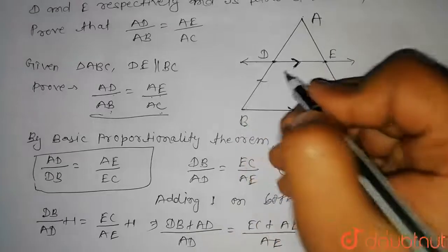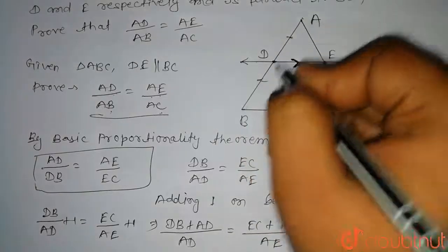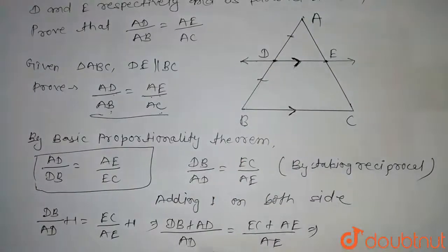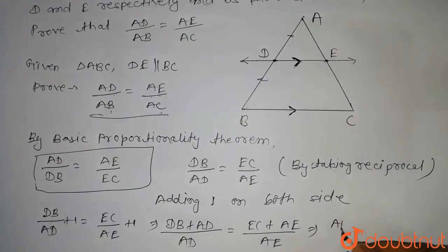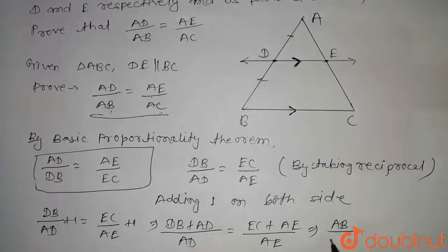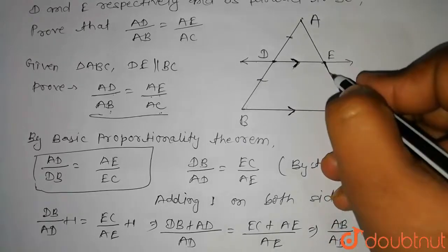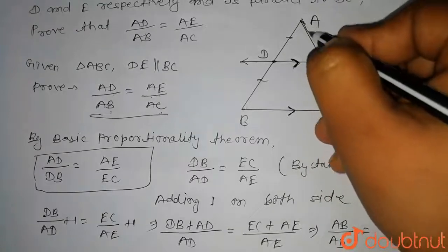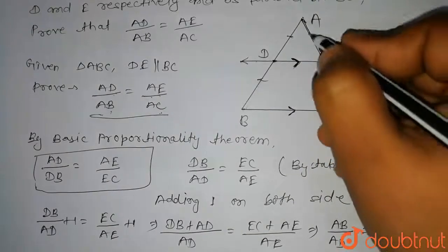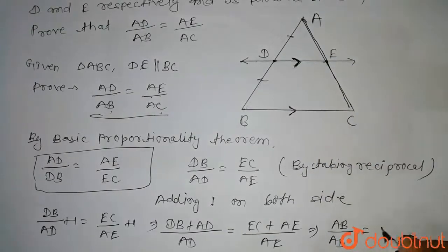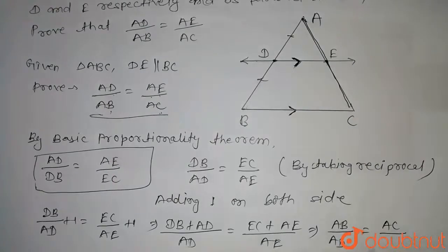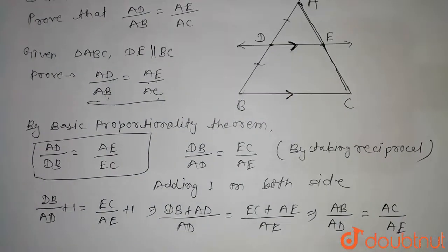Now, we have DB plus AD equal to AB. So we can write here AB divided by AD equal to, and this is EC plus AE. So this length EC and this length AE will be equal to AC. So we can write here AC divided by AE.